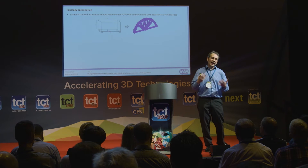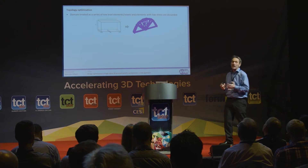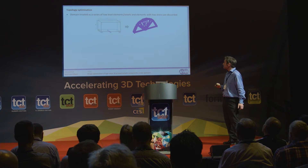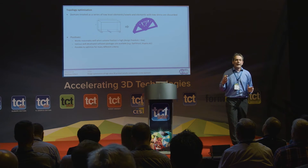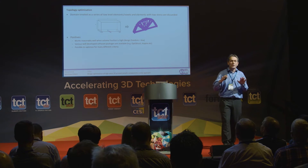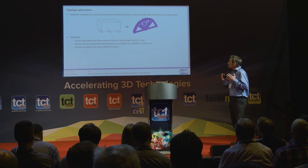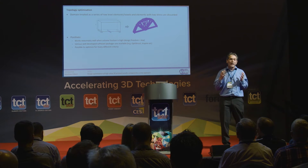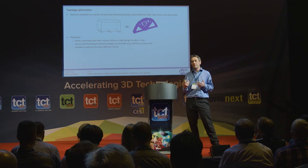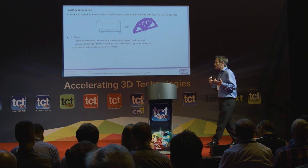So imagine a sculptor working on a block of stone, chipping away the low stress areas to reveal, in this case, a crude version of a half bicycle wheel — a bit like a Minecraft-type structure. Good points about topology optimization: it works pretty well when the volume fraction is quite high, so if you're chipping away a relatively small amount of material it works reasonably well. It's also been developed over many years, so we have well-developed software packages such as OptiStruct, Solid Thinking Inspire, TrueForm, and the like.